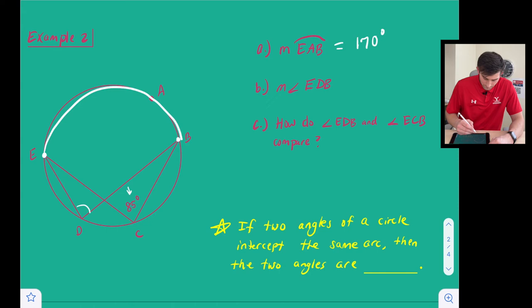Which means if this arc was 170 degrees then my angle right here is going to be half of 170 degrees. So that's going to give us 85 degrees.